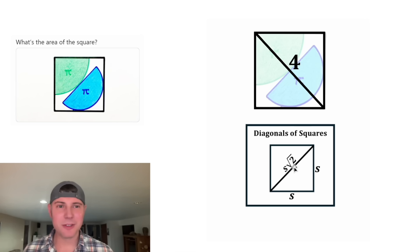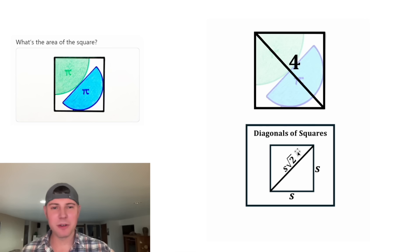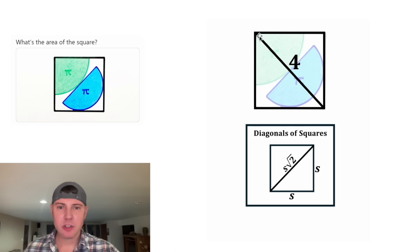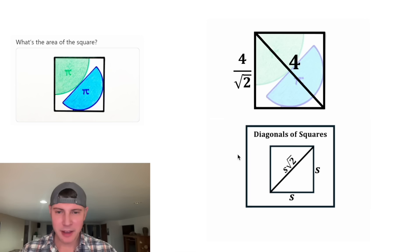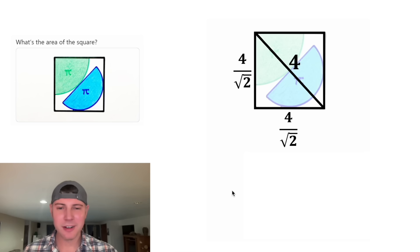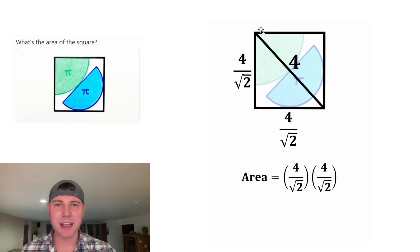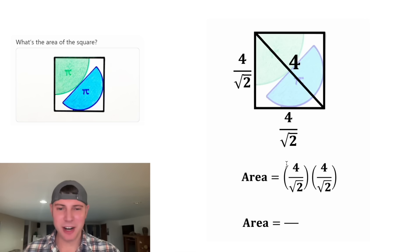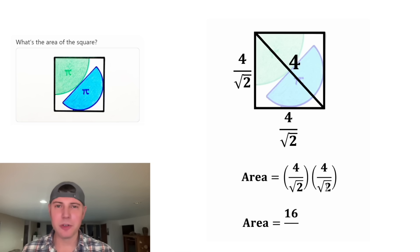Now we can recycle these notes. To get from the side to the diagonal, you multiply by the square root of two. But to get from the diagonal to the side, you divide by the square root of two. So if this diagonal is four, the side would be four divided by square root of two. And since it's a square, the base would also be four divided by square root of two. The area of this square will be base times height: four over root two times four over root two. On top, four times four is 16, and on the bottom, root two times root two is two.